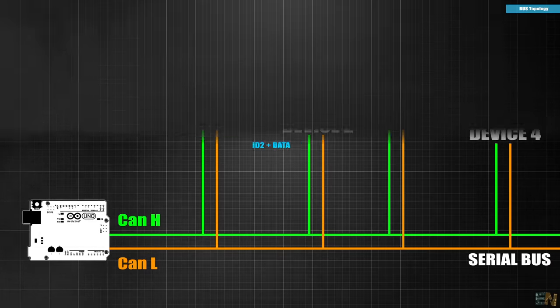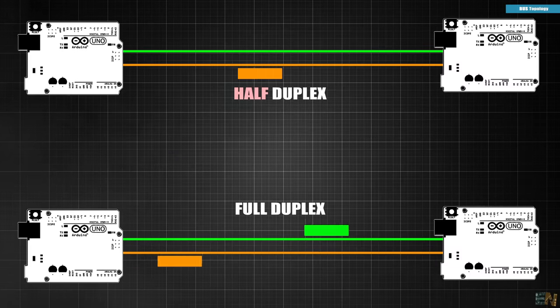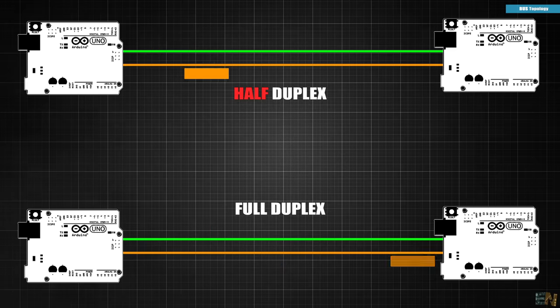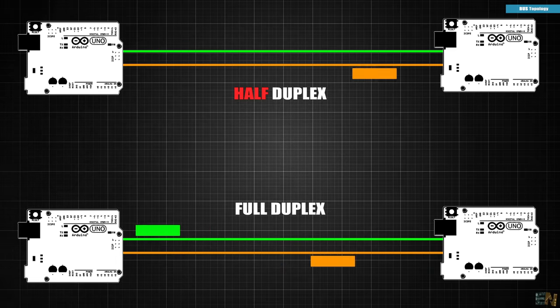And because this is half duplex, only one device could use the bus and send the data at a time. Once the transfer is complete, the other device could respond and send its data.